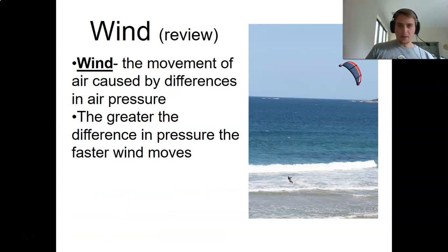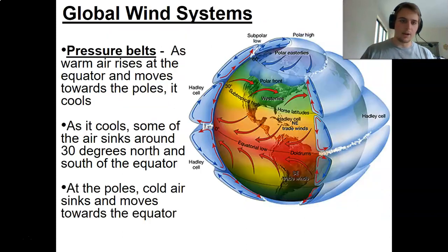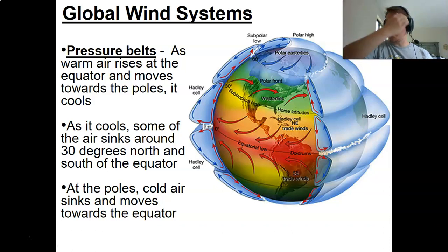Wind. This should be a little bit of a review from our last section. What wind is, is the movement of air caused by differences in air pressure. Greater the difference, faster the wind. If I've got really high pressure over here versus low pressure over here, in between, as they move from one to the other, it's going to go very quickly as that pressure difference equalizes. As we talk about wind, we need to talk about the global wind systems. This is earth science, the entire earth and how all of its systems work.